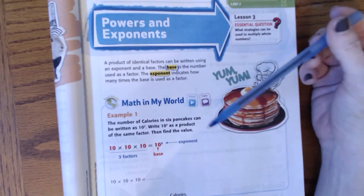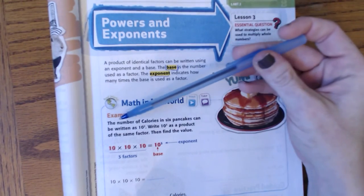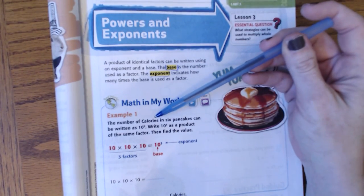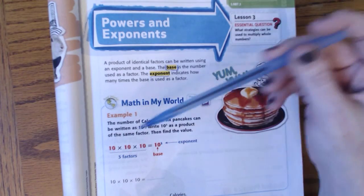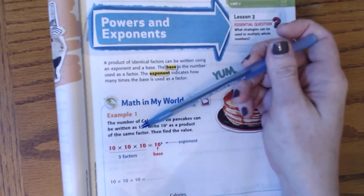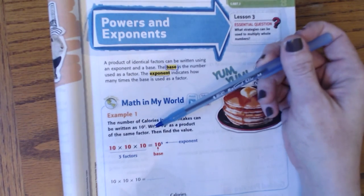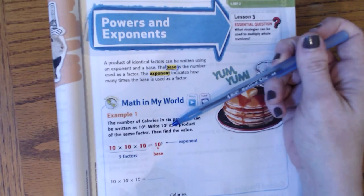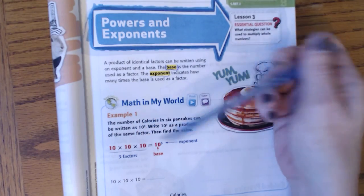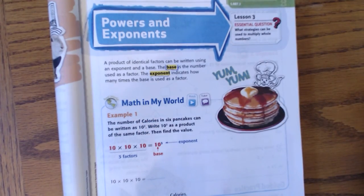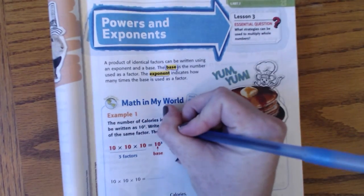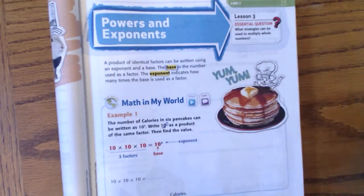So, if we talk about pancakes, it tells us that the number of calories in six pancakes can be written as ten to the power of three, or ten to the third power. Please write ten to the third power as a product of the same factor. That basically means we're just multiplying ten three times.